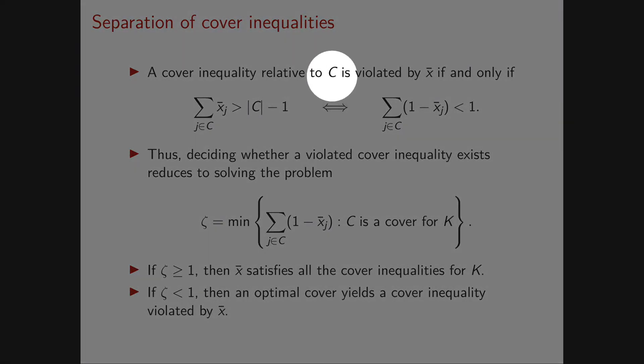In our setting, a cover inequality relative to a cover C is violated by our vector if and only if this strict inequality holds. Let's apply the trick. How can we obtain a right-hand side that is independent of C?